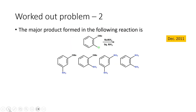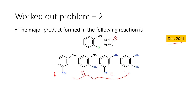Let us move on to the next problem, which appeared in December 2011. Here, the major product formed in the following reaction — a chloroanisole derivative — is treated with sodamide in the presence of liquid ammonia. We have four different products that will be formed: A, B, C, and D.